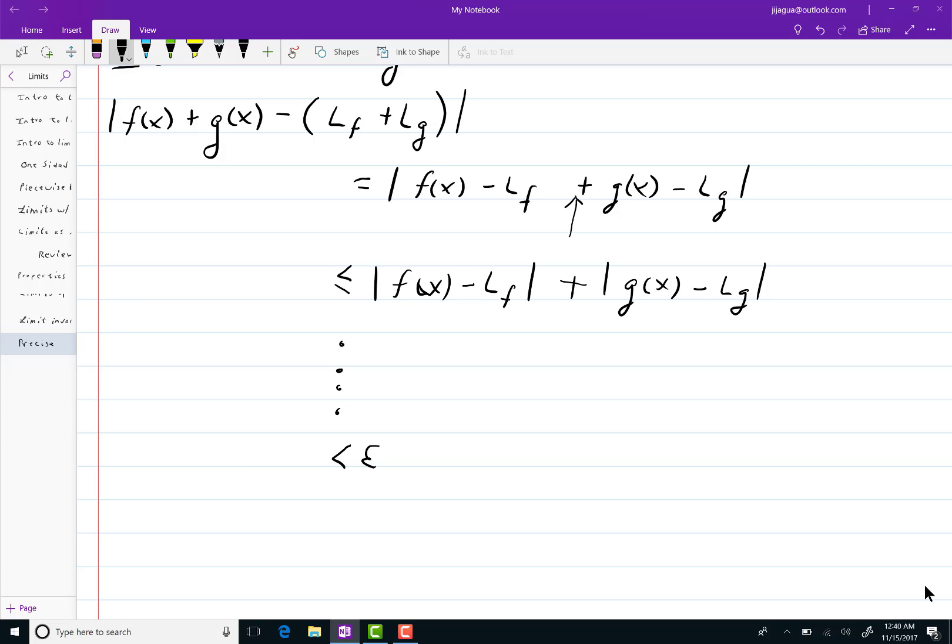So it seems to me like if I could make this piece less than epsilon over 2, and then this piece also less than epsilon over 2, the two of them will add up to be epsilon. Alright, so let's see if I can make that happen.